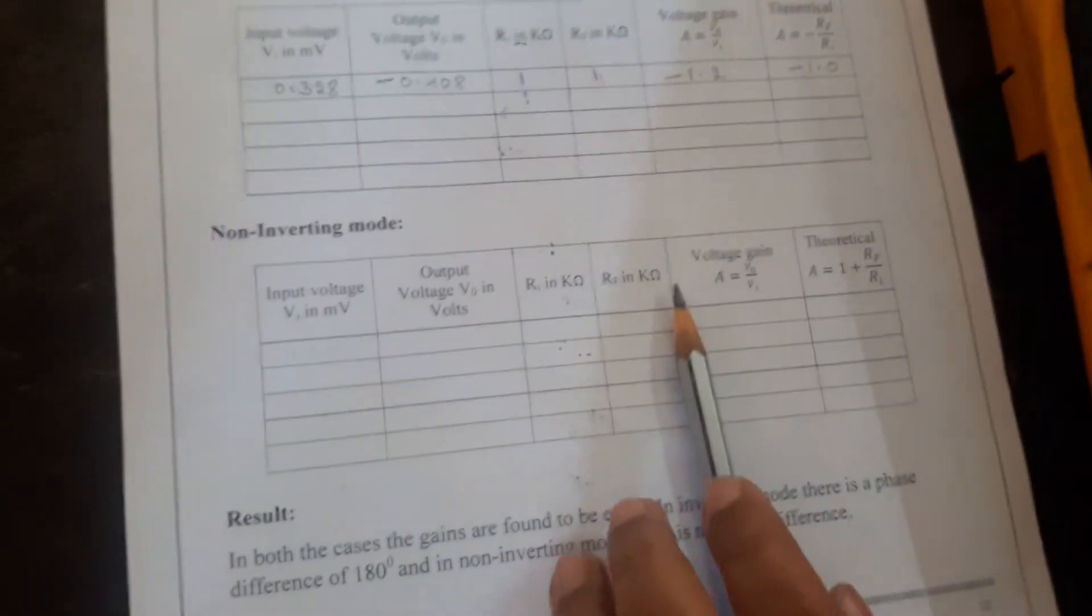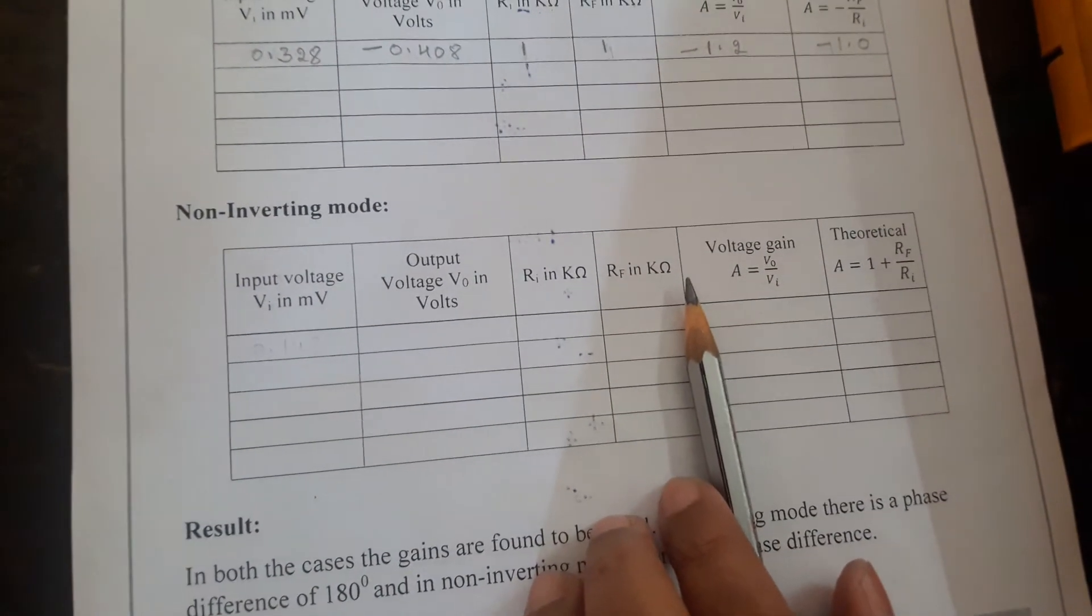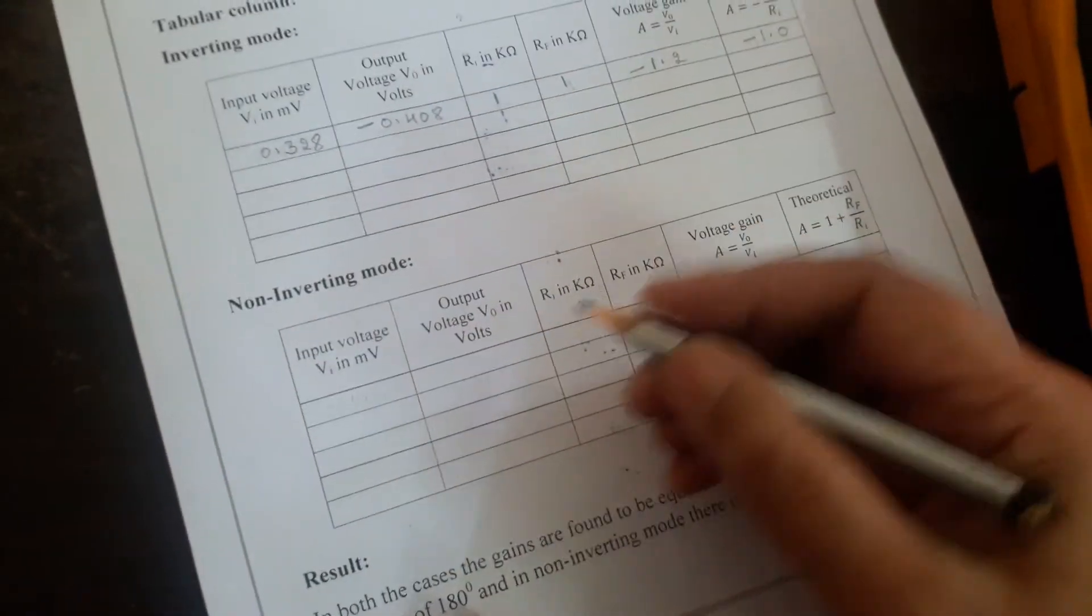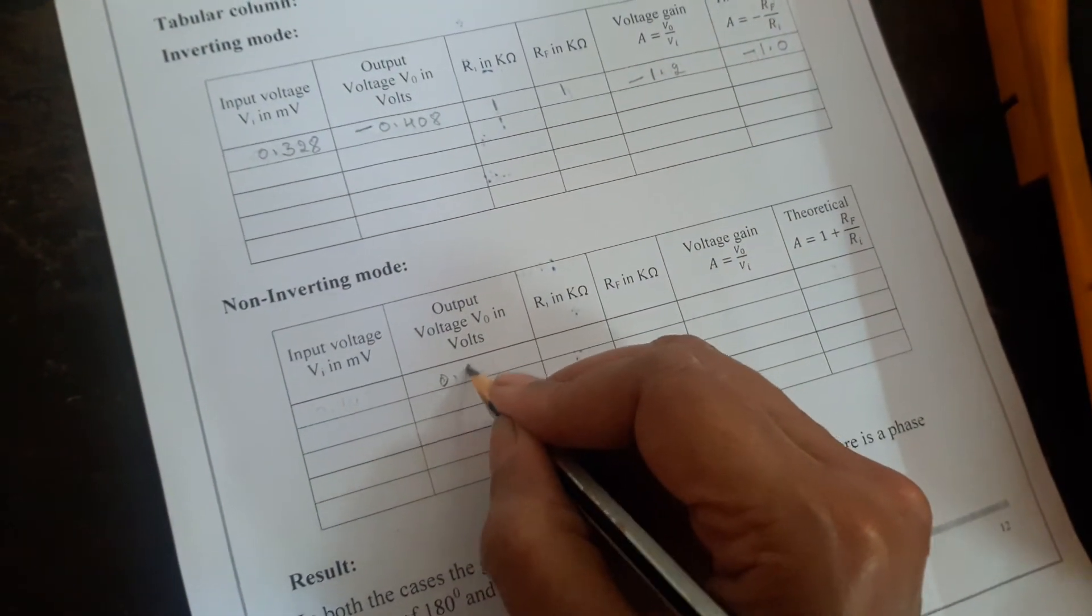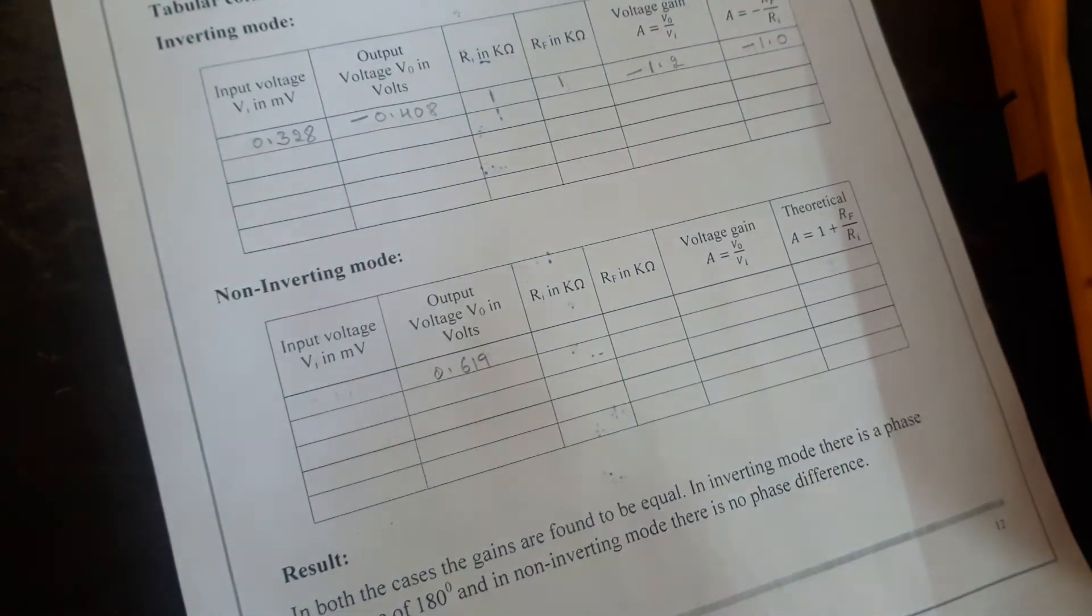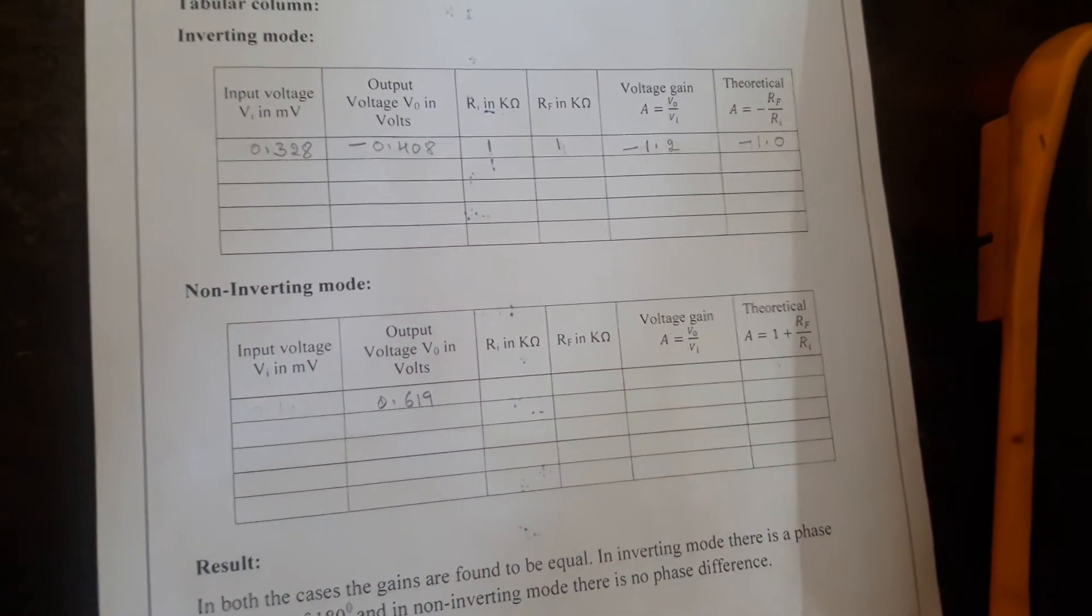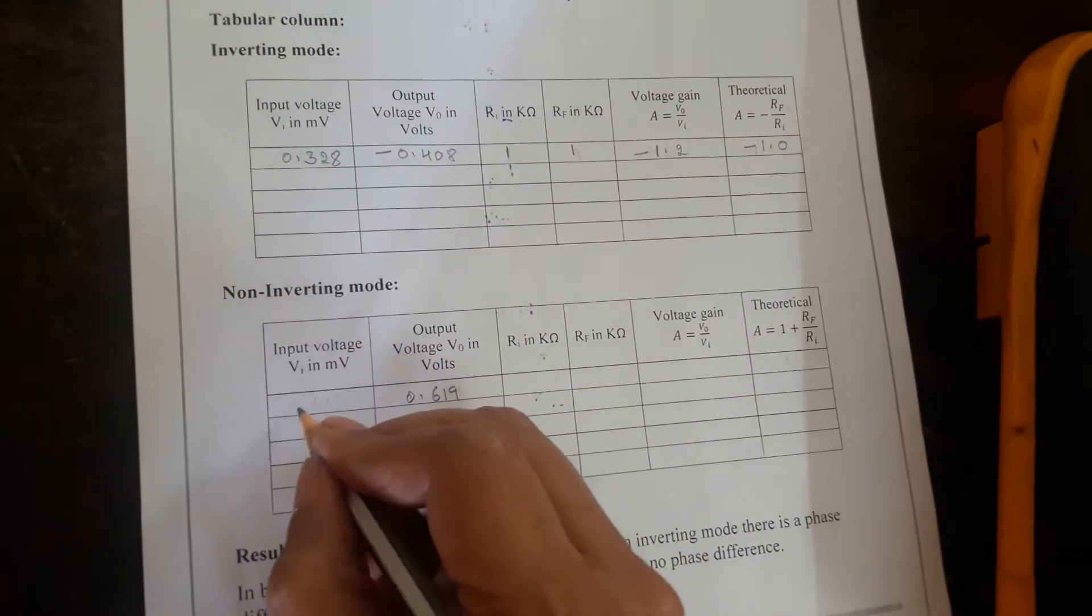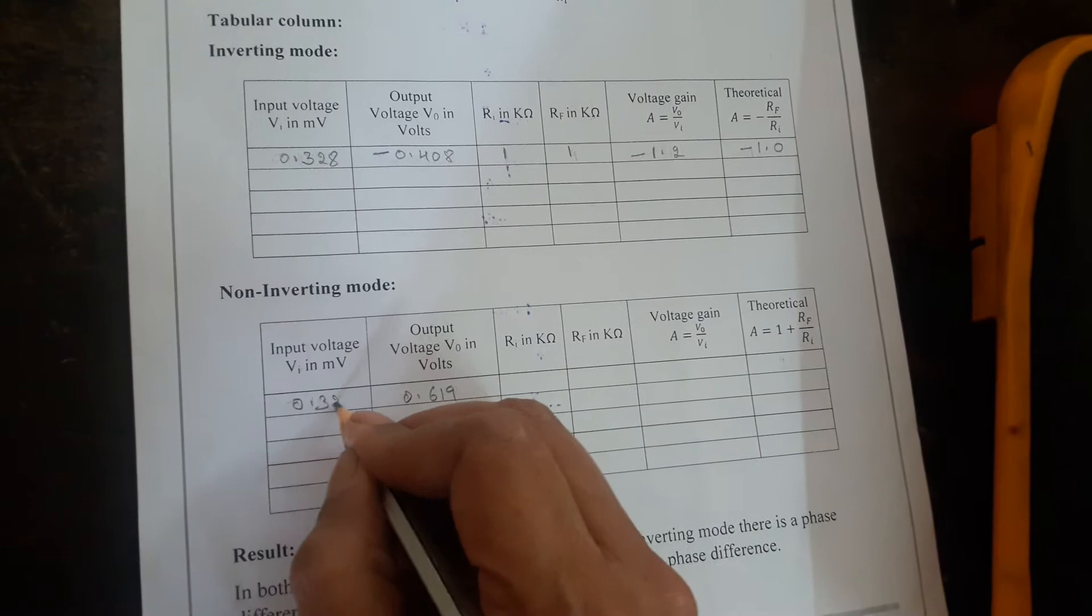I will take readings one more time. Output is coming as 0.619. I will measure the input once again at the pin number 3. 0.327 we are getting.